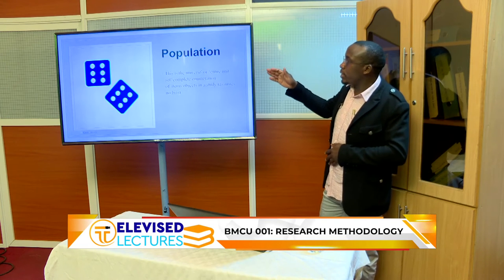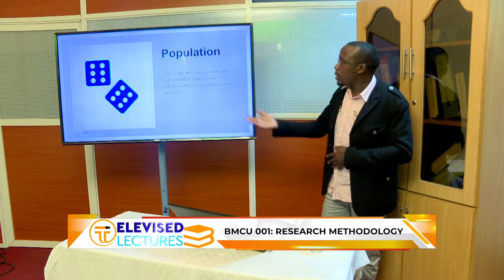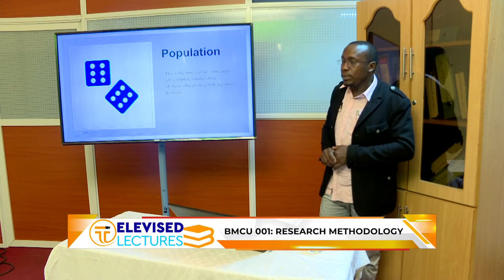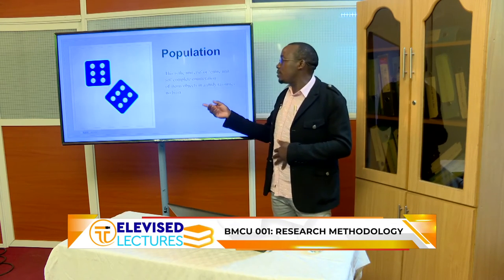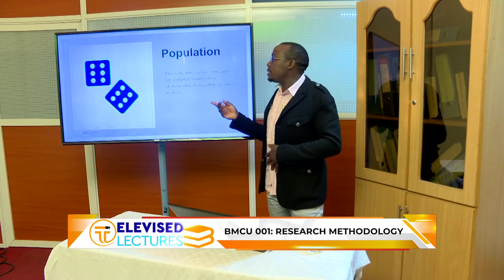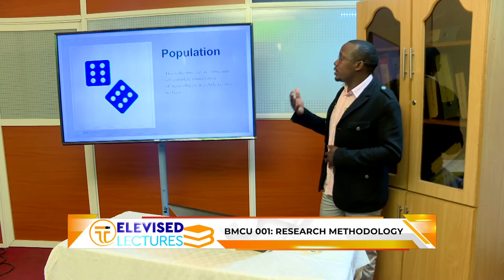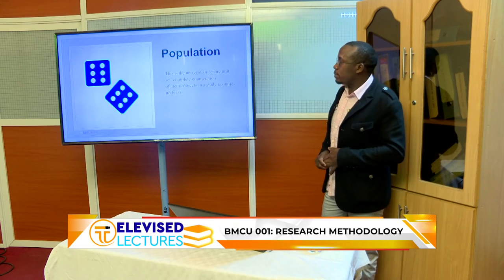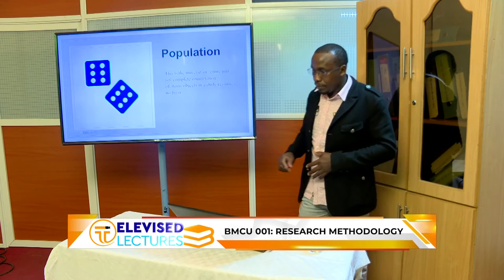So we have the target population, which is the entire unit. Then we have the accessible population — the population you can actually access and draw your sample from. That might be the 200 or 300 companies that are available and operational in Nairobi.